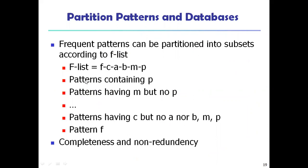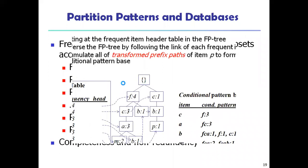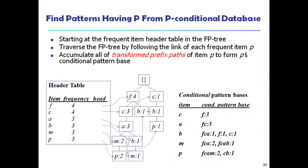From this F-list you have to make patterns containing P, then patterns having M but no P, then pattern having C but no A, B, M, or P. Then pattern F — this ensures completeness and non-redundancy. In this order with F, C, A, B, M and P, you frame the patterns one by one.